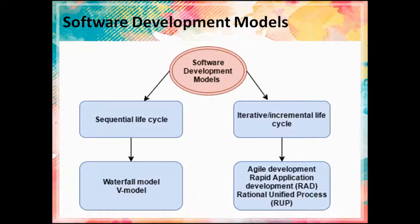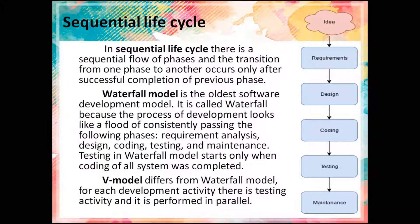Waterfall model and V-model are software development models with sequential life cycle, while agile development, rapid application development, and rational unified process are models with iterative or incremental life cycle. In sequential life cycle there is a sequential flow of phases, and the transition from one phase to another occurs only after successful completion of the previous phase.